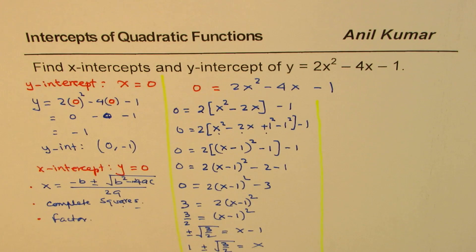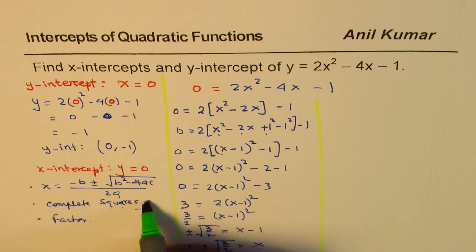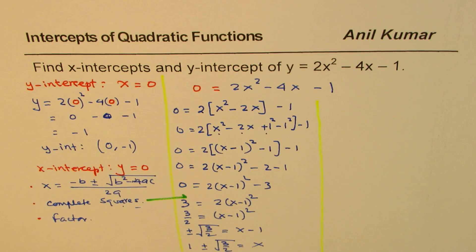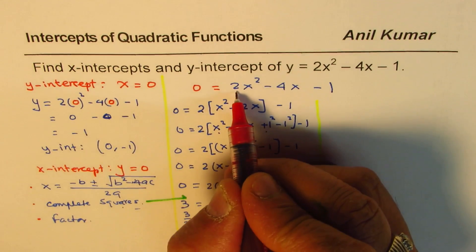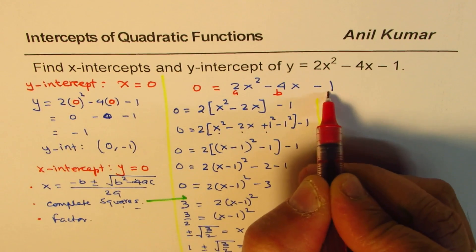So that is completing the squares. So what we did just now was completing the squares method. Now let us use the formula. So in the formula, this number is a, this number is b, this number is c.